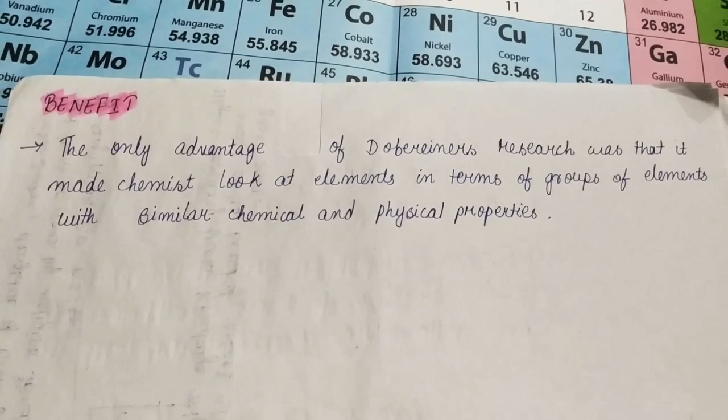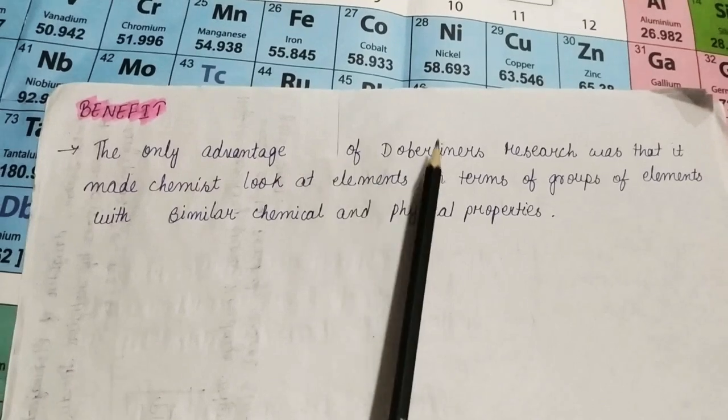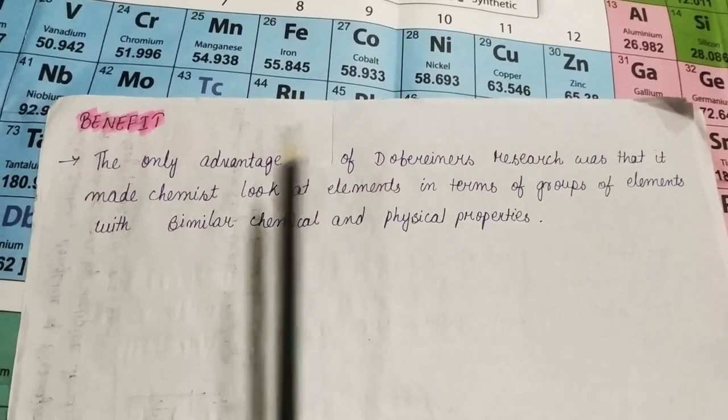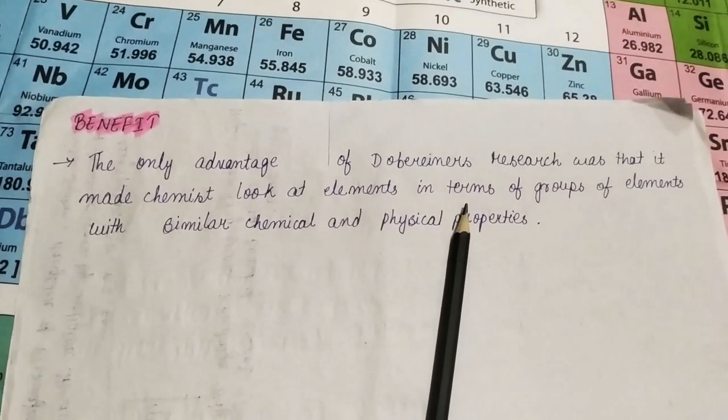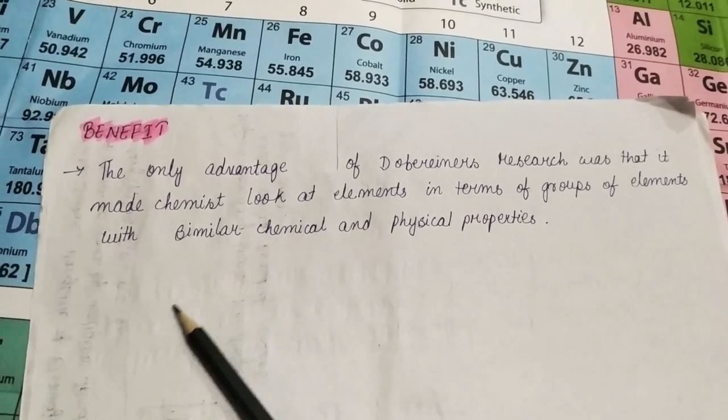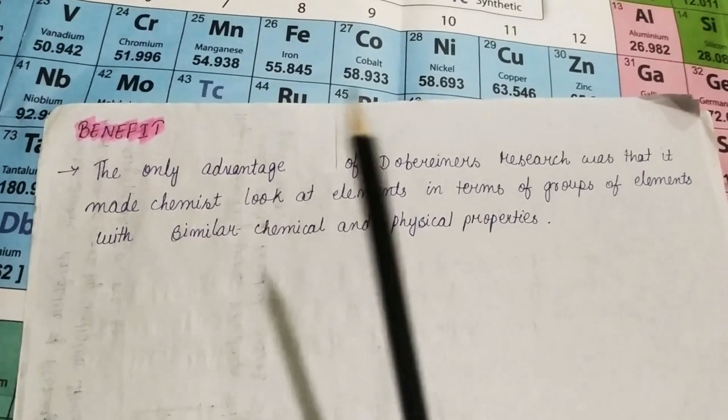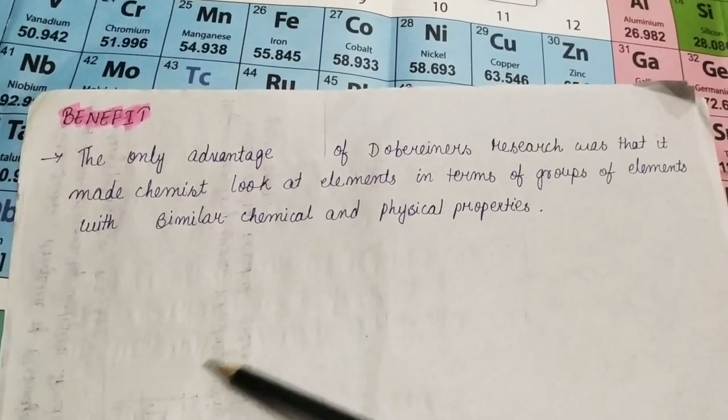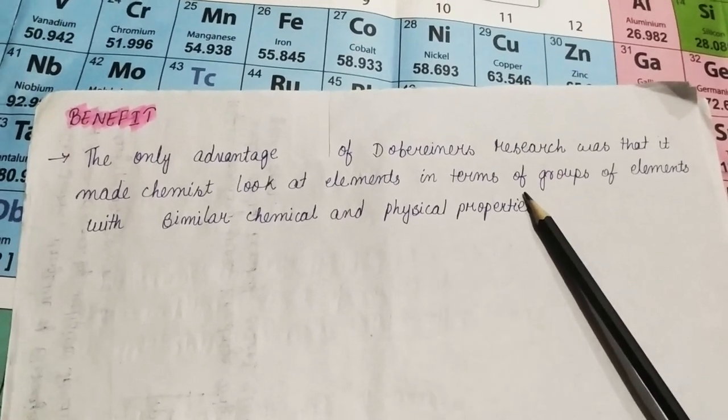We have the benefit of this Dobereiner triad. Let us see what's the benefit. The only advantage of Dobereiner's research was that it made chemists look at the elements in terms of groups of elements with similar chemical and physical properties. As I said earlier in this video, he gave the first idea of classifying and arranging elements in terms of their similar properties. So, his idea was taken up and the new chemists researched on it and tried to group different elements as per their similar chemical and physical properties. This was the only benefit of his triad.